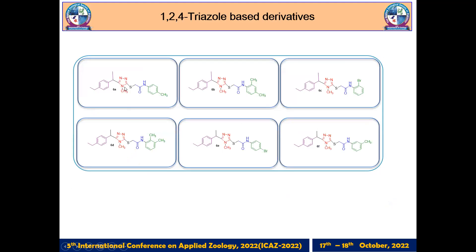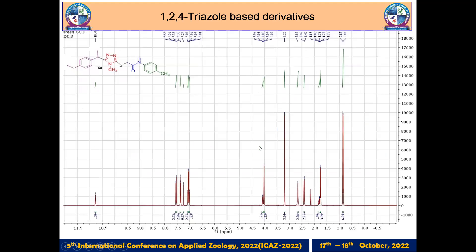Here is a list of six different derivatives that differ in the position of substituent groups. I have added some electron-donating as well as electron-withdrawing groups to generate structural diversity among the compounds.